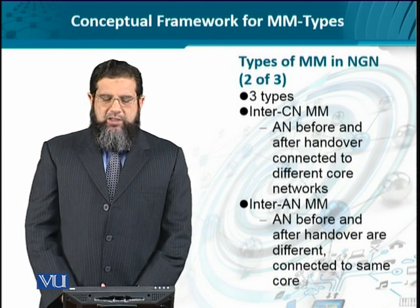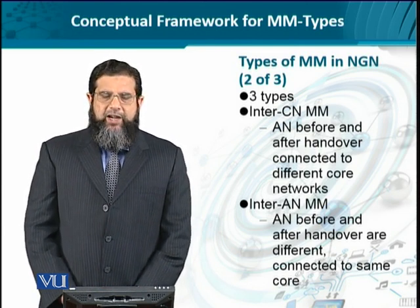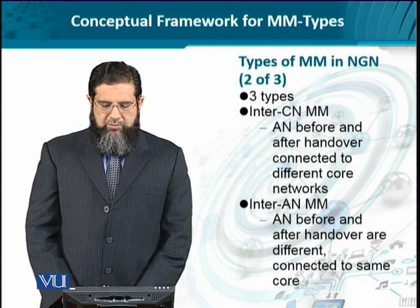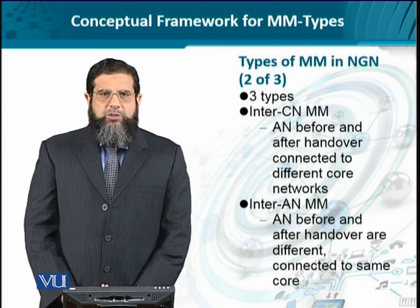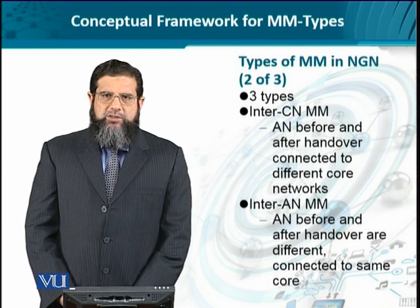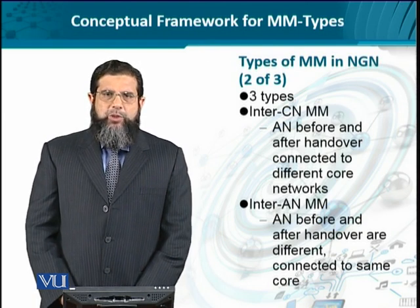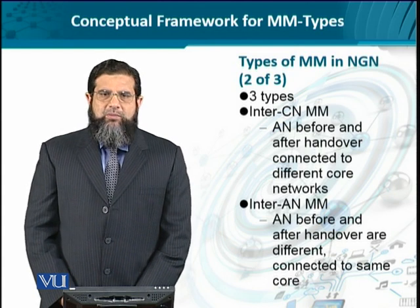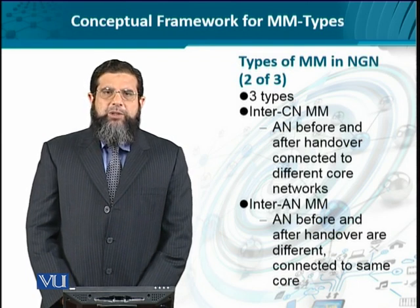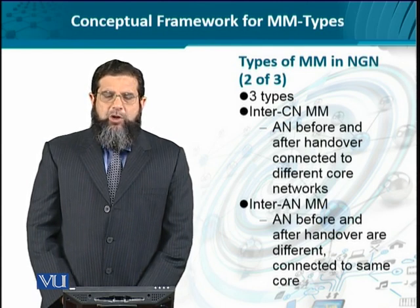So there are three types. The first and most obvious one is when the core network changes — meaning the access network before and after the handover is now connected to different core networks. It means the mobile or user equipment is moving from one network to another and the core technology has changed. This is a very significant change, so theoretically a lot of control signaling is going to take place because the overall core functions of the two networks are different.